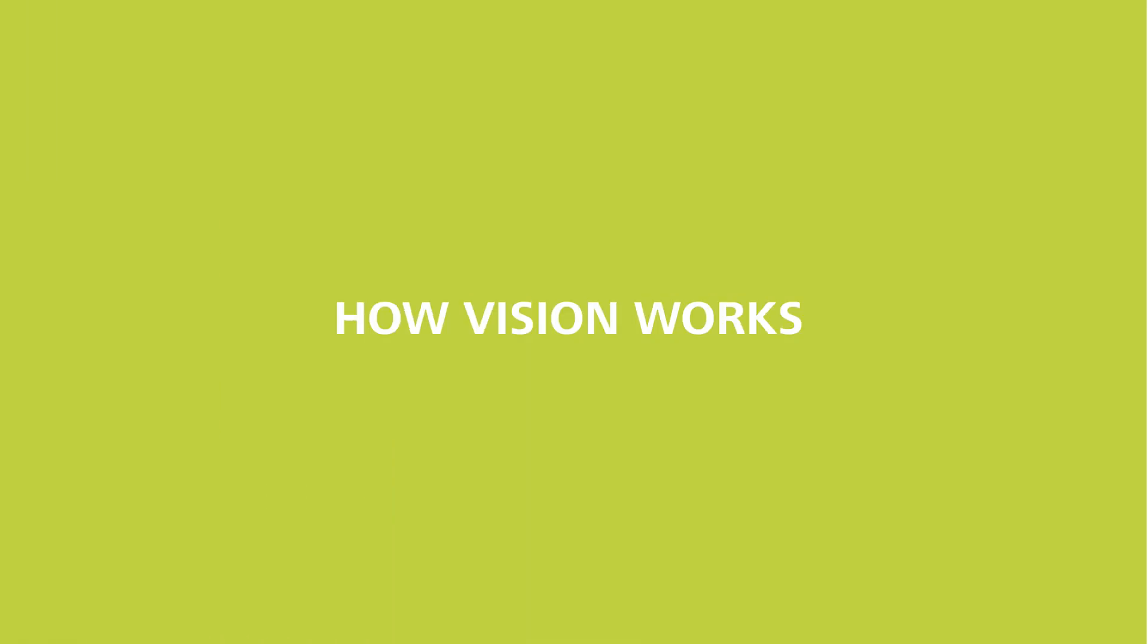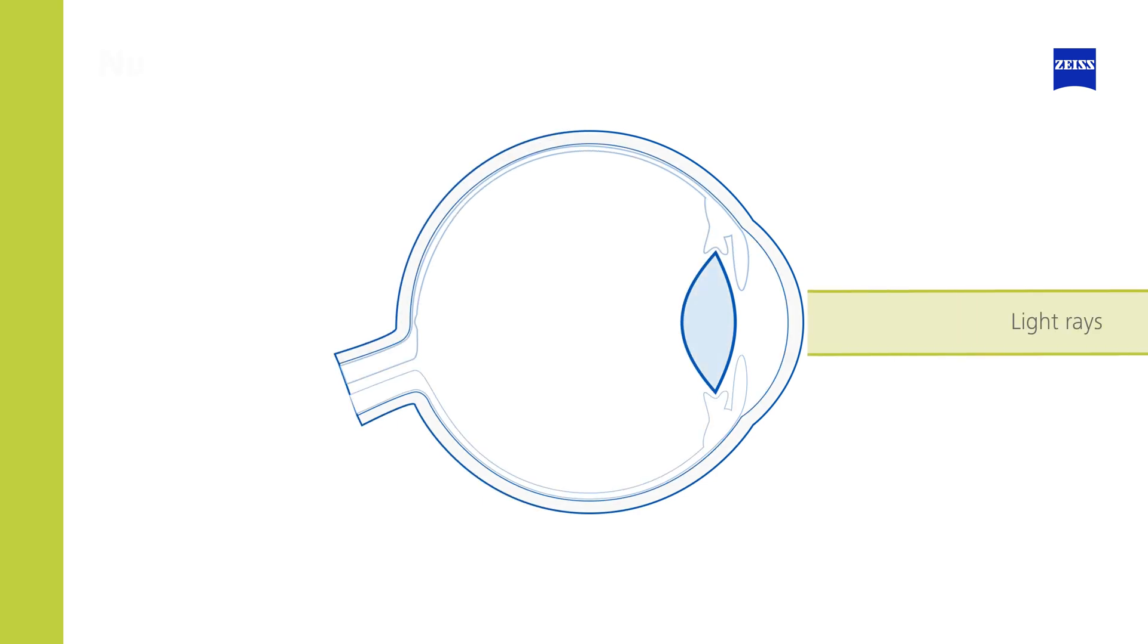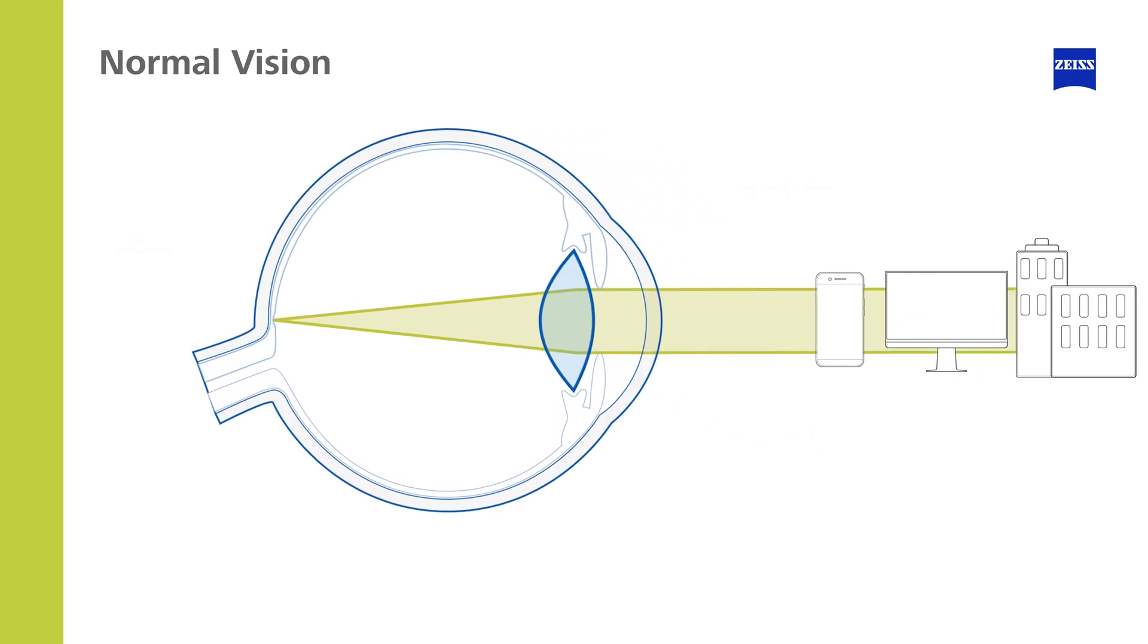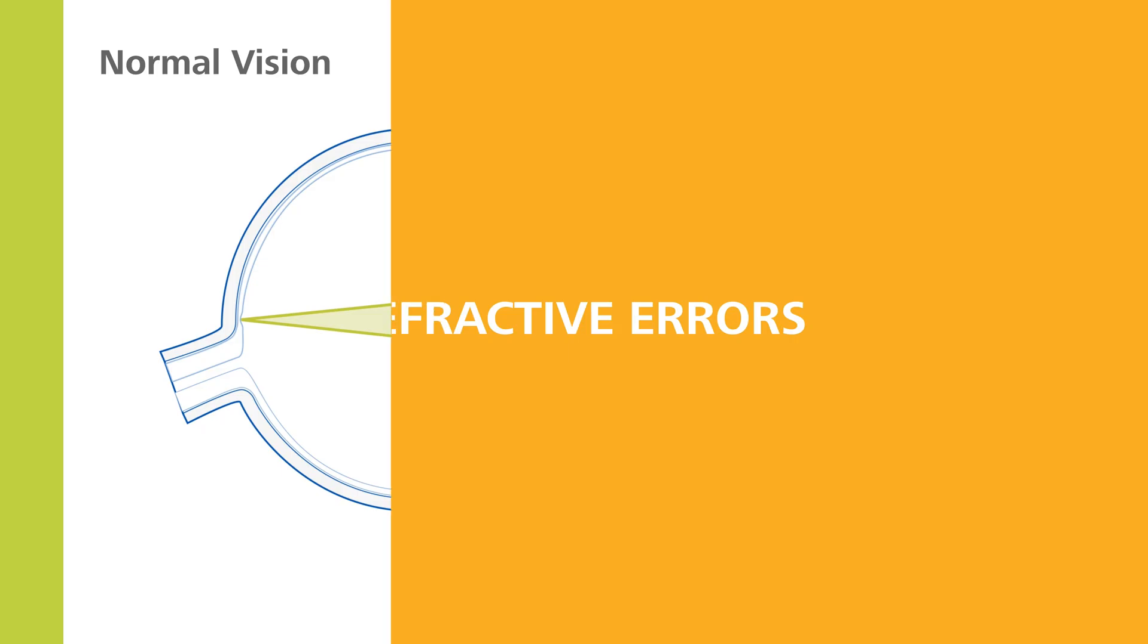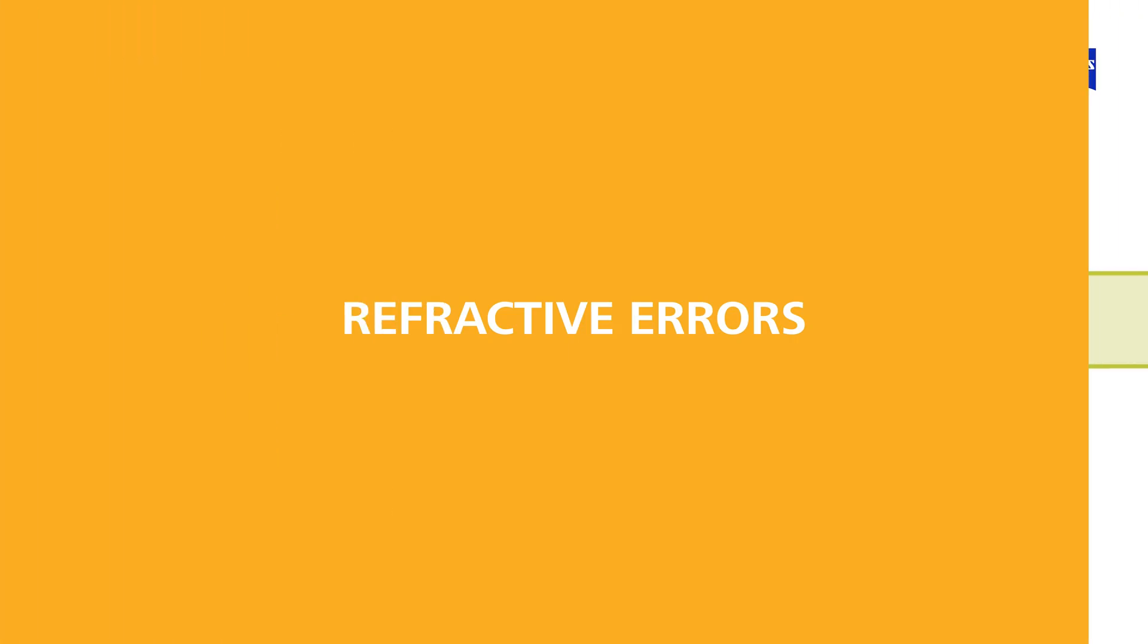But let's start from the beginning and explain how vision works. In a healthy eye, light rays enter the eye through the cornea and lens and are focused directly on the retina at the back of the eye, producing a clear image at all distances. But what happens if the proportions of the eye are irregular?